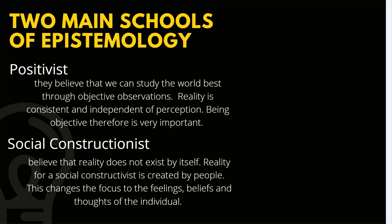The exact opposite school of epistemology is the social constructionist. They believe that reality does not exist by itself. Reality, for a social constructivist, is created by people, and this changes the focus to the feelings, beliefs, and thoughts of the individual. It's more like a nominalist in a sense that they believe reality does not exist independently. So how does a social constructionist investigate the world? They listen to the feelings, beliefs, and thoughts of individuals, because what shapes reality is actually the perception and feelings of the person — the ideas of reality that are inside.